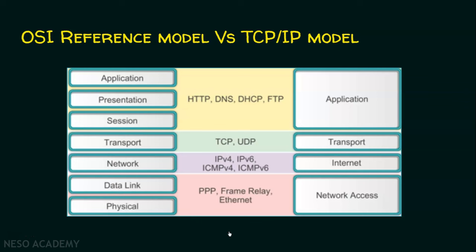There are protocols in every layer of the TCP/IP model. In the network access layer: Point-to-Point Protocol (PPP), Frame Relay, and Ethernet. In the internet layer: IP (IPv4 or IPv6), ICMPv4, and ICMPv6. In the transport layer: TCP and UDP. In the application layer: HTTP, DNS, DHCP, and FTP.